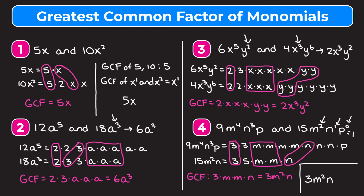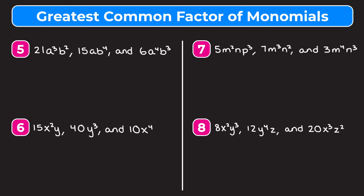Now let's go over four examples finding the greatest common factor of three monomials. These are very similar — we just write out the prime factors for a third monomial. Example 5: 21a cubed b squared, 15ab to the fourth, and 6a to the fourth b to the third. For 21a cubed b squared: 21 is 3 times 7, a cubed is three a's, b squared is two b's.